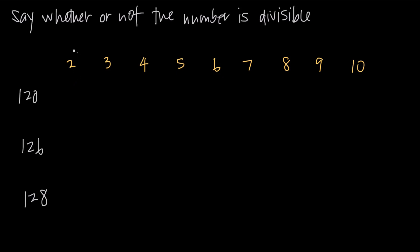The divisibility rule for 2 is the most obvious. If the number is an even number, then it's going to be divisible by 2. The way you know for sure if it's even is if the last digit is 0, 2, 4, 6, or 8. So because the numbers 120, 126, and 128 all have an even last digit — 0, 6, and 8 are all even — we know that all three of these numbers are divisible by 2.